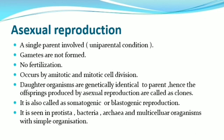The characteristic features of asexual reproduction are: it involves a single parent — only one parent is involved. Hence, asexual reproduction is called uniparental reproduction. As gametes are not formed in asexual reproduction, there is no fertilization. In this, cells divide either by amitotic or mitotic cell division.